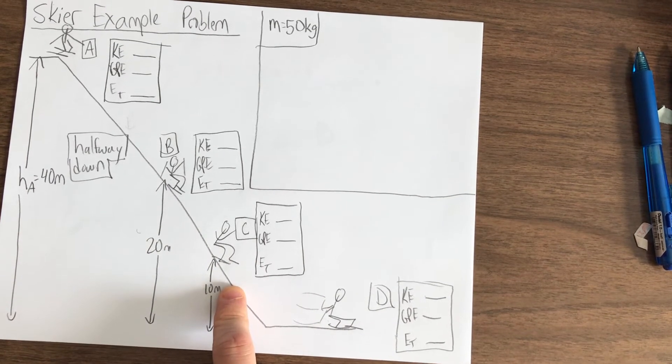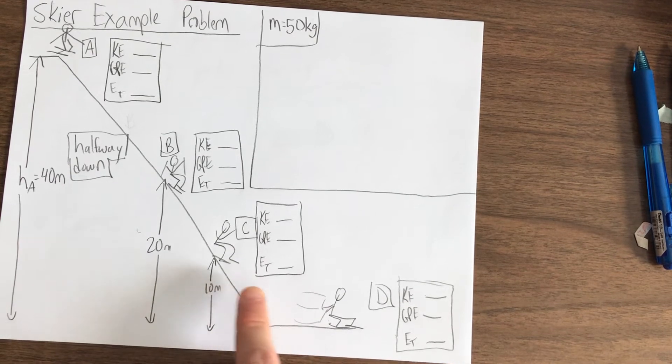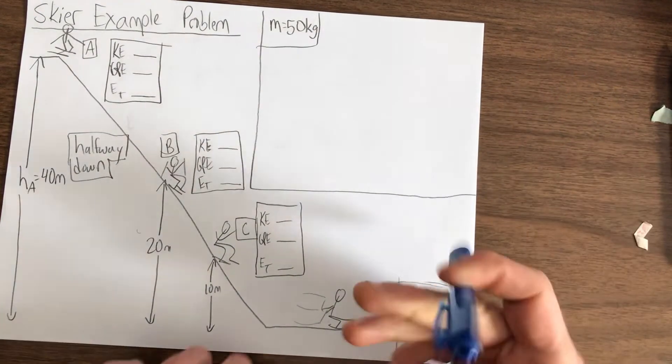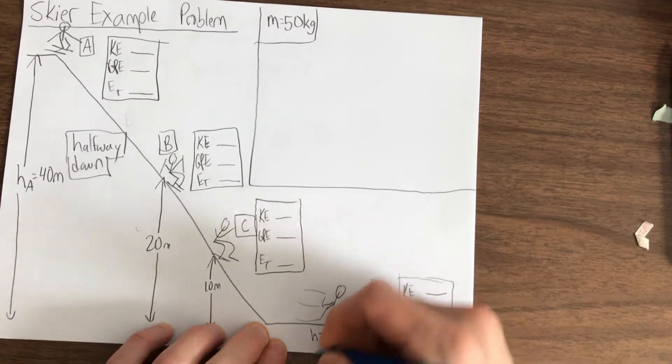Position C, the skier is a little further down, only 10 meters up. And letter D, you can write down because they're at ground level that the height is zero.